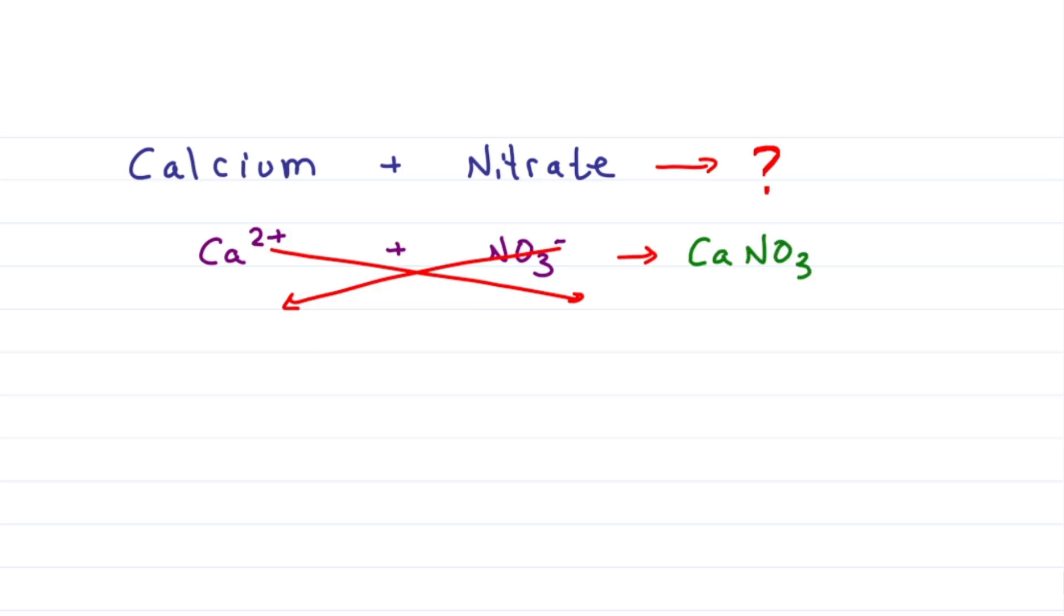That's CaNO3. Do I just put the 2 here? No. Because that would be 3 times 2 for 6 oxygen. But what about the nitrogen?